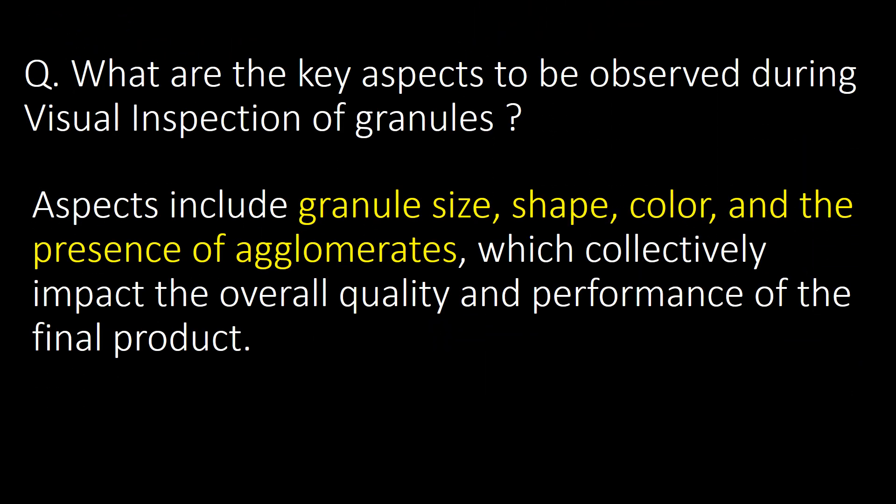What are the key aspects to be observed during visual inspection of granules? Aspects include granule size, shape, color, and the presence of agglomerates, which collectively impact the overall quality and performance of the final product.